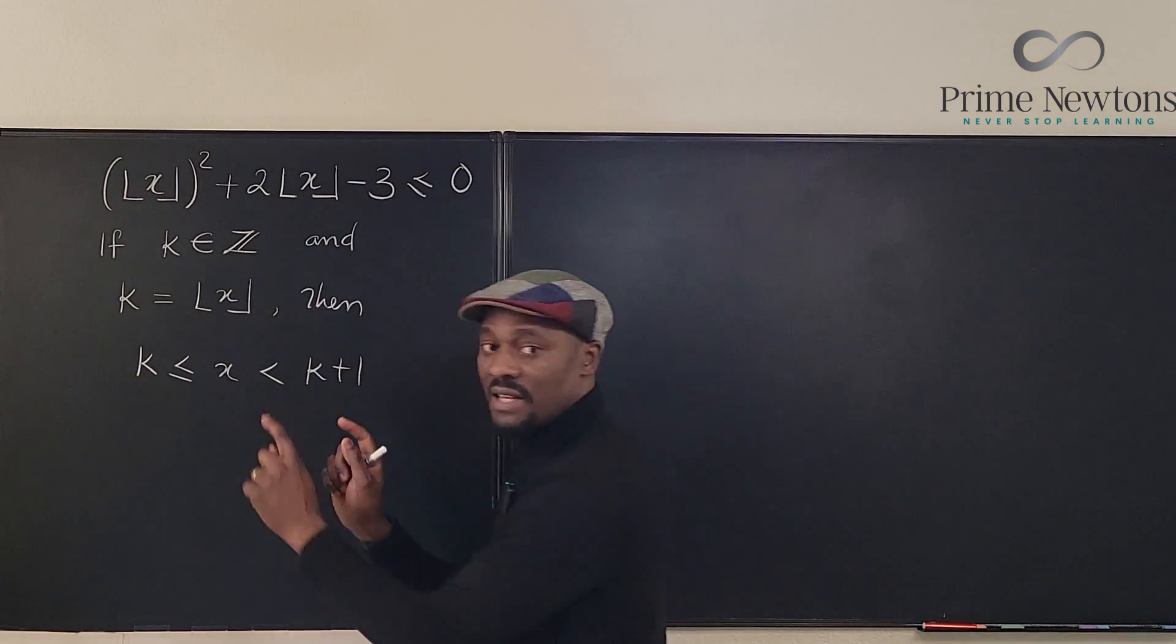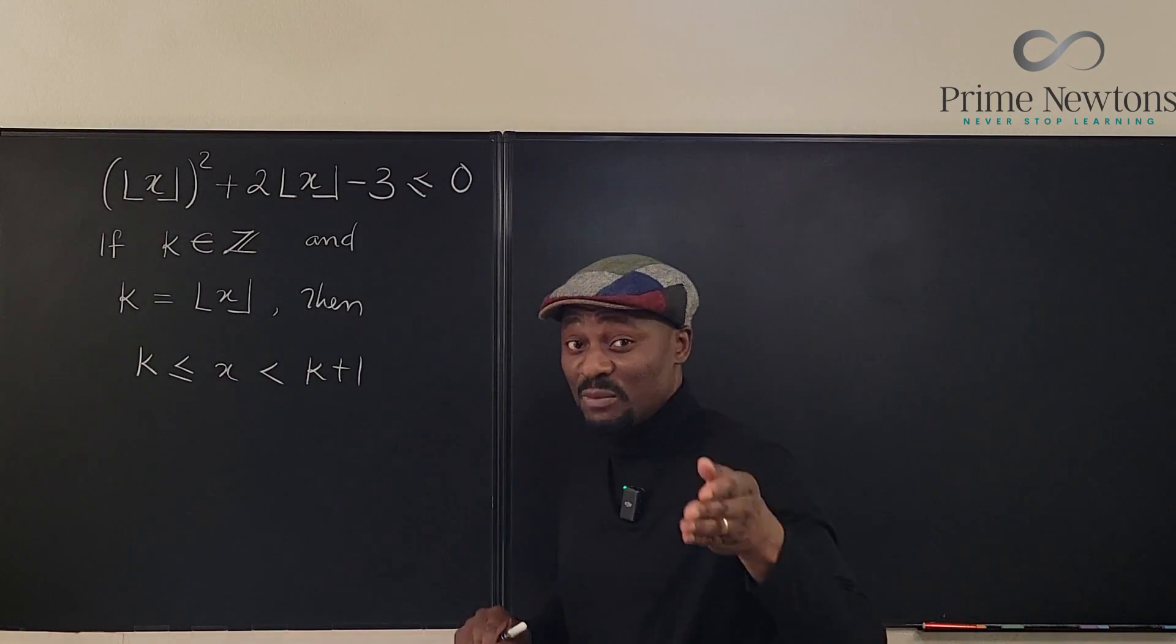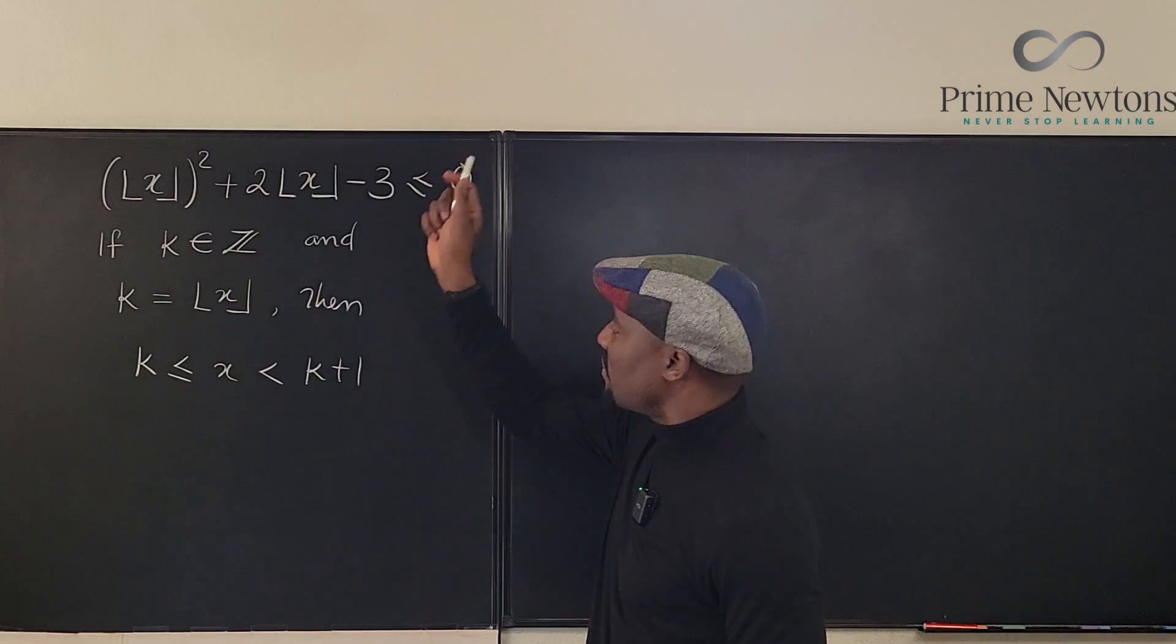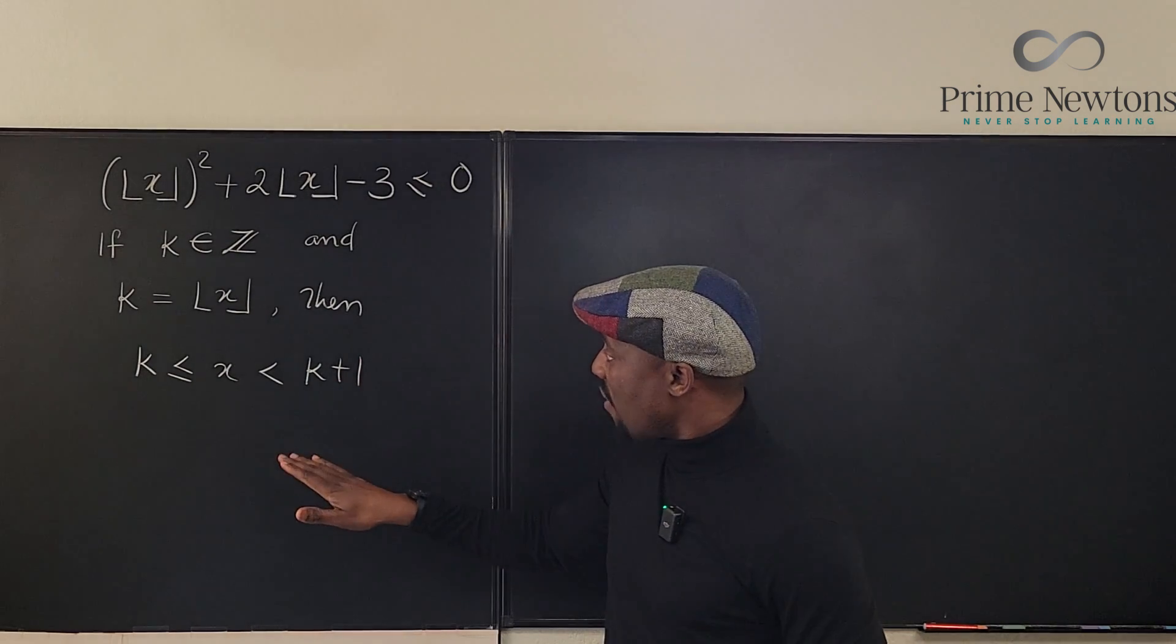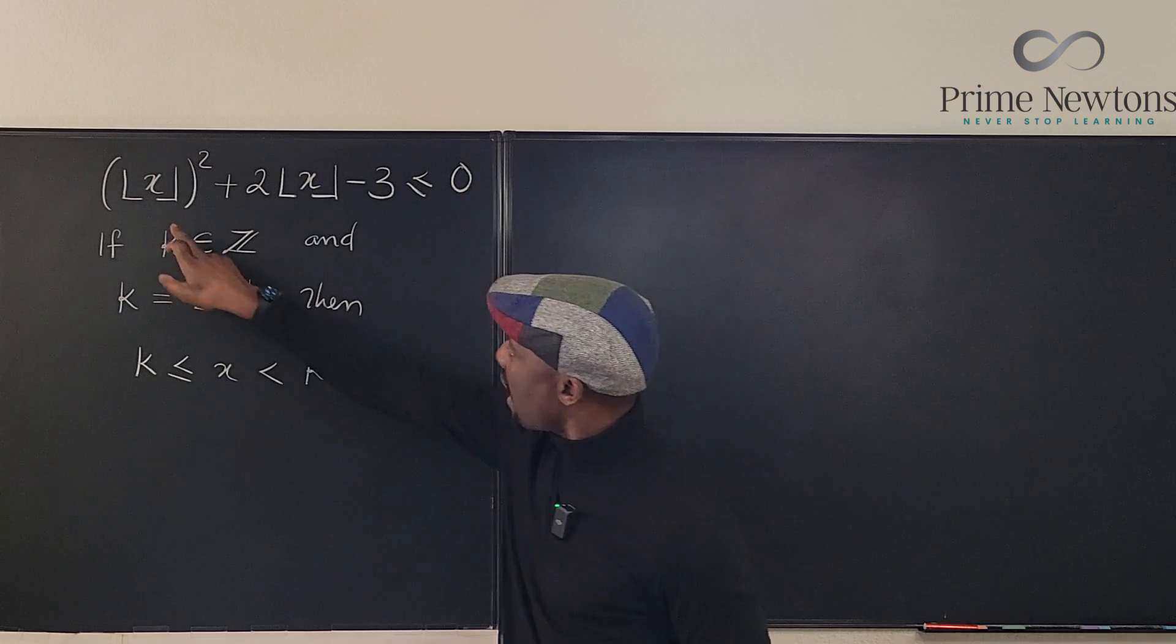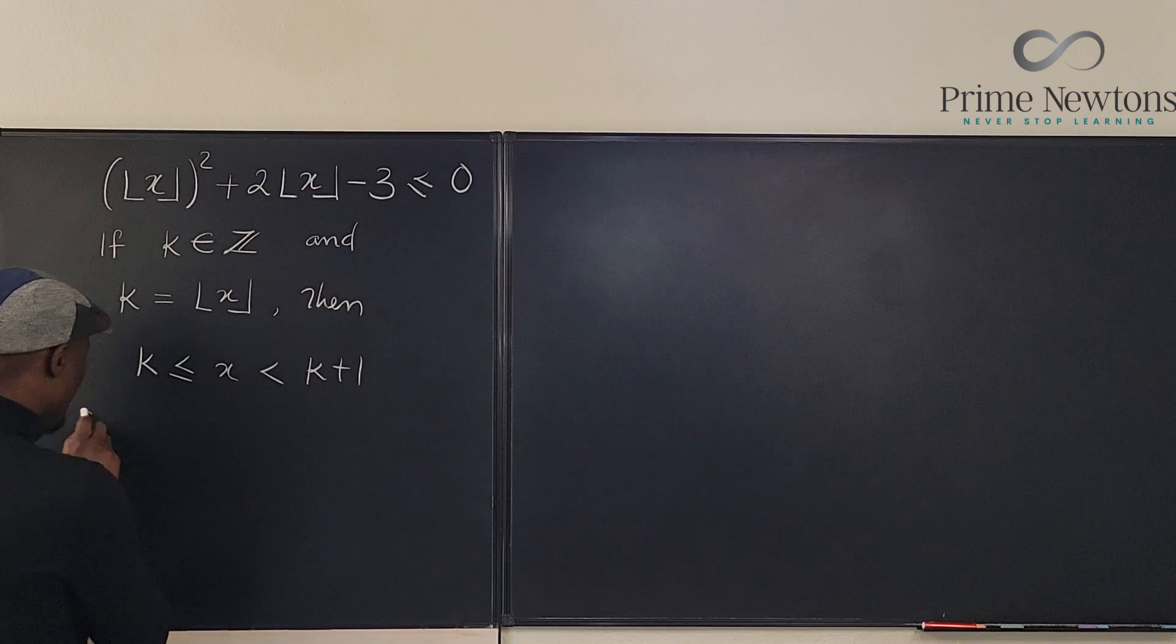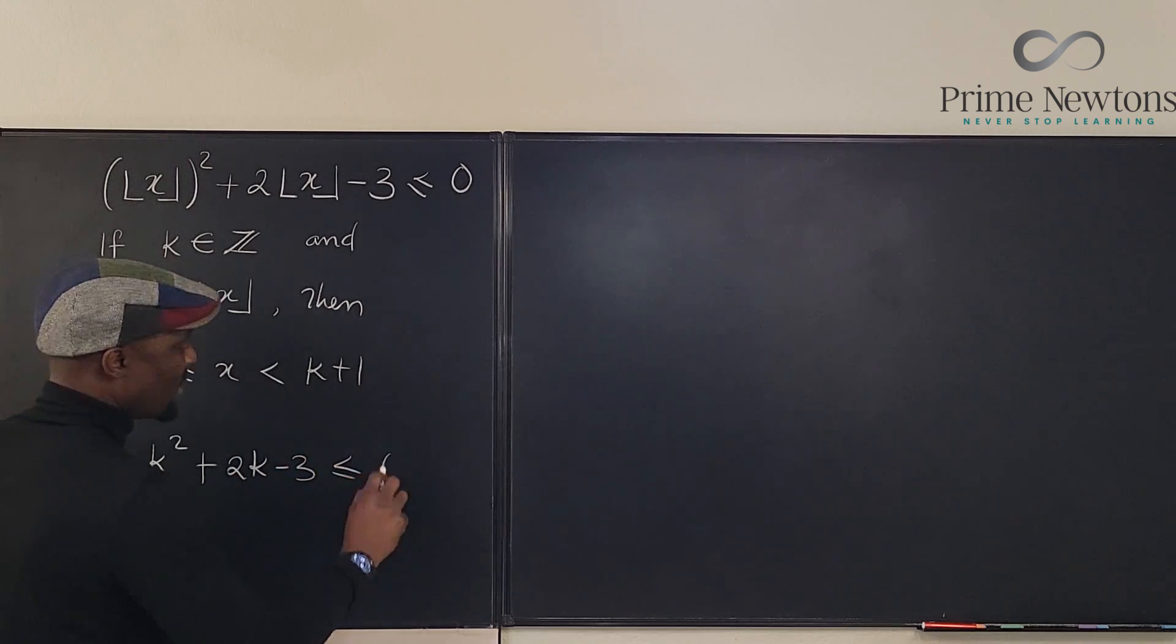Now this is gonna be our final answer because what we're dealing with is an inequality. We're not actually looking for specific values of K, I mean of X. We're looking for a range of values because we're solving a quadratic floor inequality. So what I'm gonna do now is go to the actual equation. If K is equal to the floor, I can replace whatever you see here with K. So we can say K squared plus 2K minus 3 is less than or equal to zero.